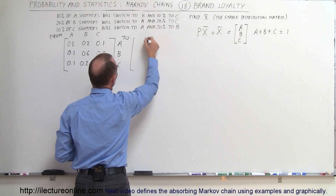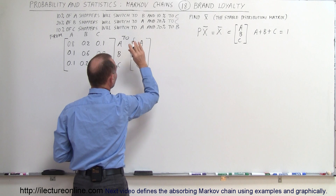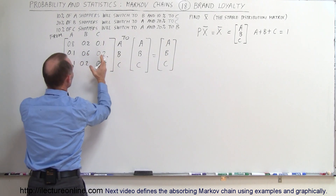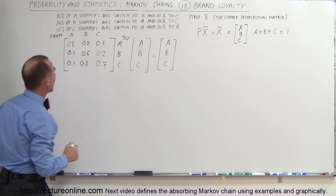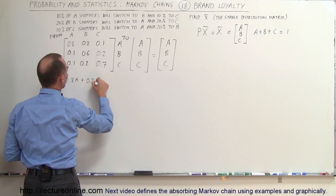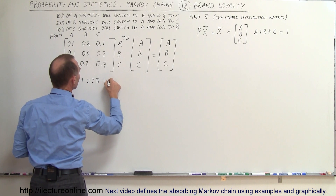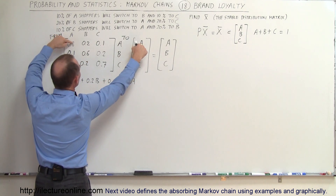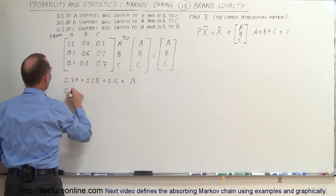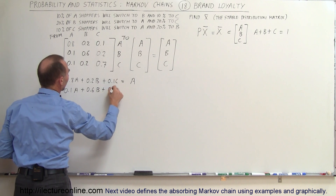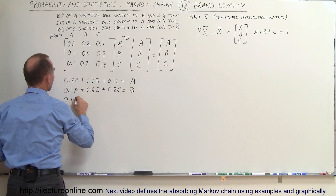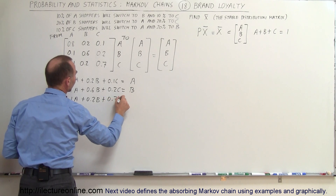Multiplying the transition matrix by the stable distribution matrix gives us three equations: 0.8A + 0.2B + 0.1C = A; 0.1A + 0.6B + 0.2C = B; and 0.1A + 0.2B + 0.7C = C.